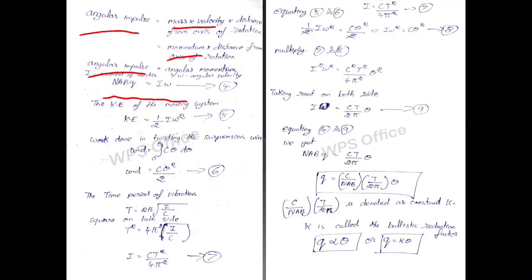Kinetic energy of the moving system is 1 by 2 I omega square, taken as equation 5. Work done in the twisting of suspended wire is equal to integration of C theta d theta, so that work done is equal to C theta square by 2.